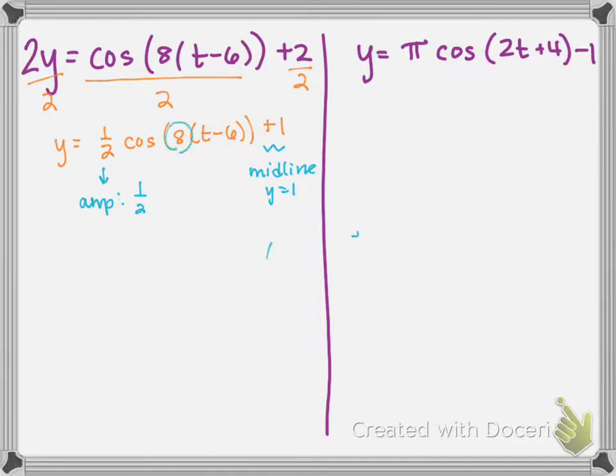And then the 8, which has already been factored away from the t minus 6, so I can talk about it as my B value. If I want to report the period here, I have to do 2π over the 8, so that makes a π over 4 for the period for this one. So it takes only π over 4, which is like 45 degrees, for this cosine graph to complete one full cycle.